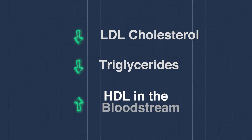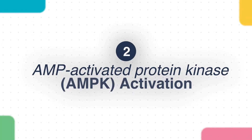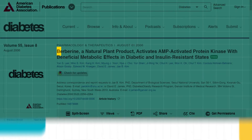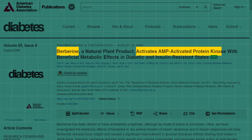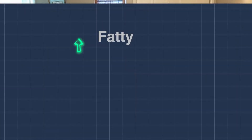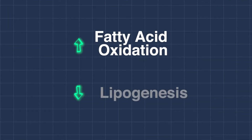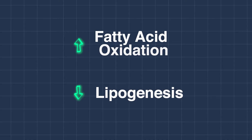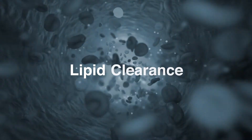Additionally, berberine increases HDL levels in the bloodstream. Berberine activates AMP-activated protein kinase (AMPK), a key regulator of energy metabolism. AMPK activation in the liver results in increased fatty acid oxidation and decreased lipogenesis, promoting a shift toward energy expenditure and lipid clearance — essentially metabolizing and clearing fats from the body. This contributes to berberine's beneficial effects on lipid profile and insulin sensitivity.